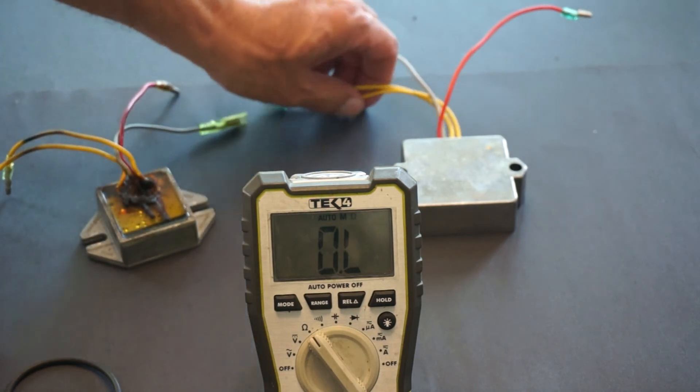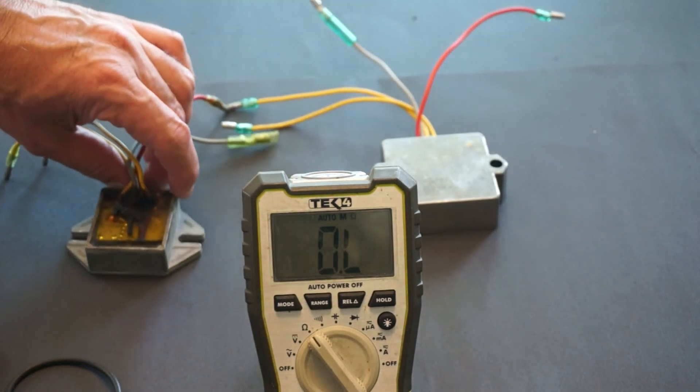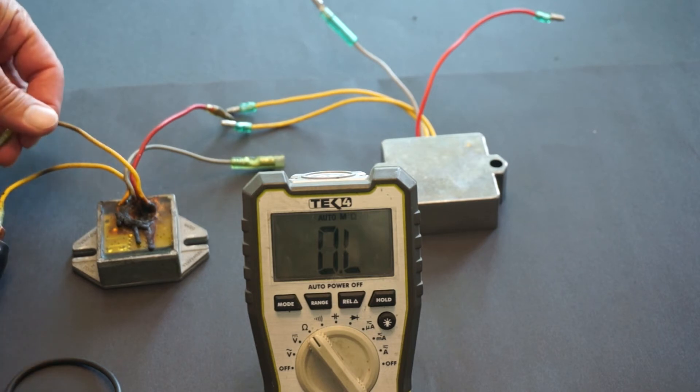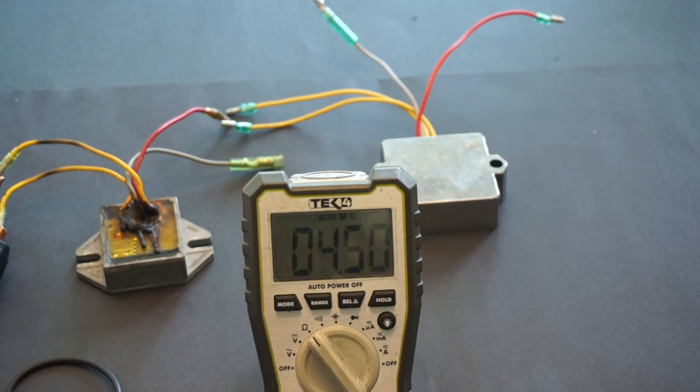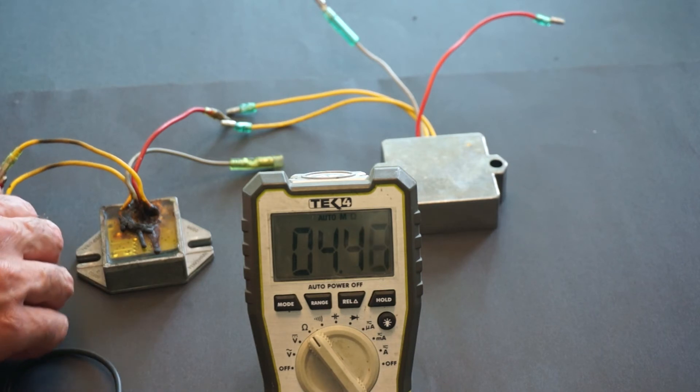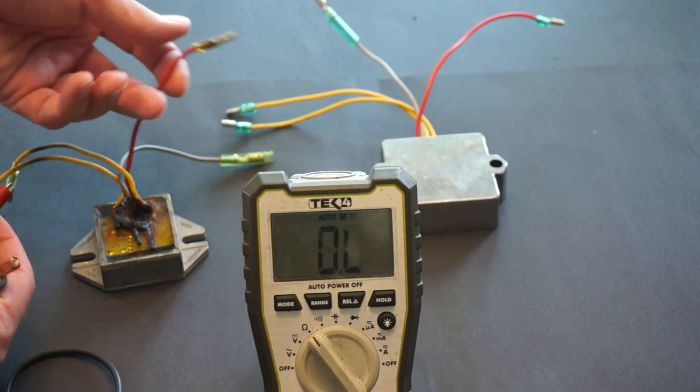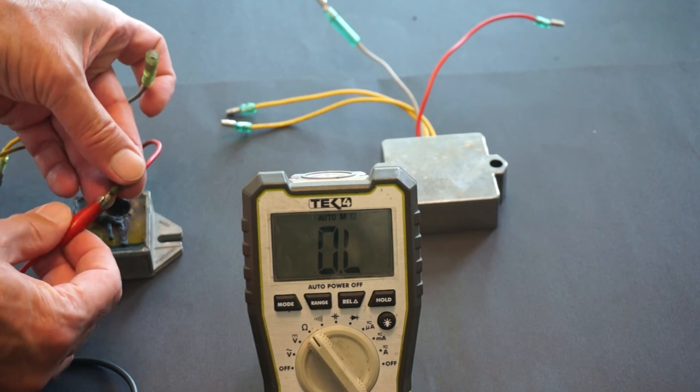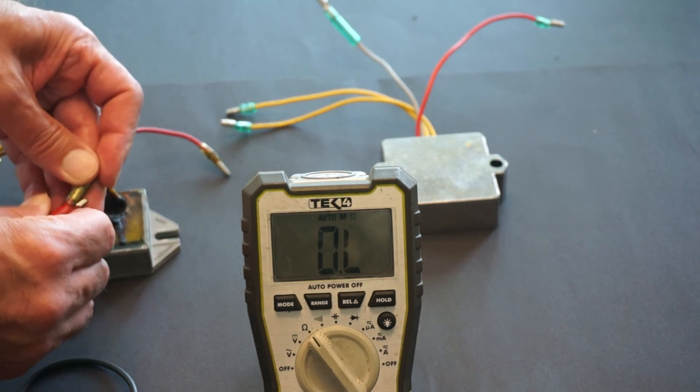Let's take a look at the bad one. The first two wires, the two yellow ones, they read 4.5 meg ohms on the primary circuit and let's see on the secondary circuit.